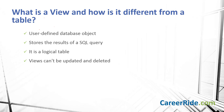Let's begin with the first question. What is a view and how is it different from a table? A view is a user-defined database object that stores the result of a SQL query. You can refer a view as a logical table because it does not store data physically. A view is a virtual table that derives its data from one or more tables. A table holds data but not a SQL query. You can update and delete data from a table but you cannot do so with a view.